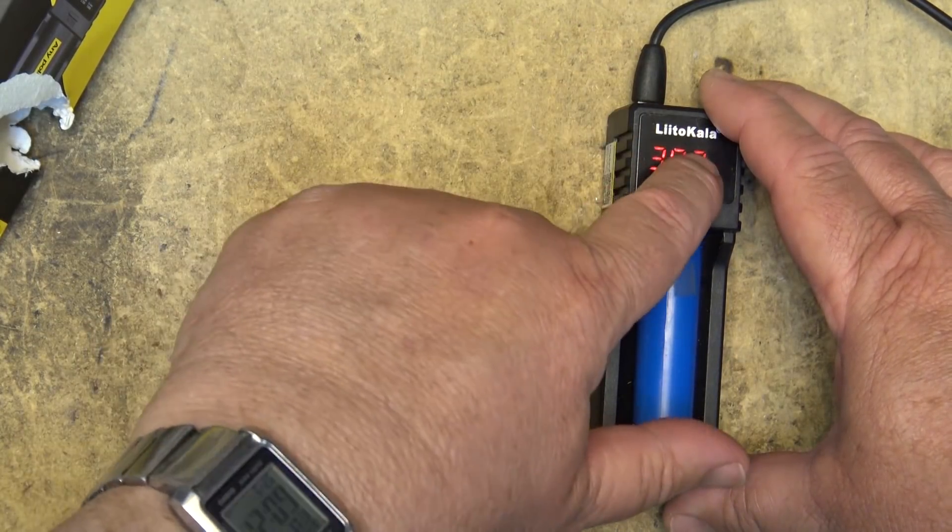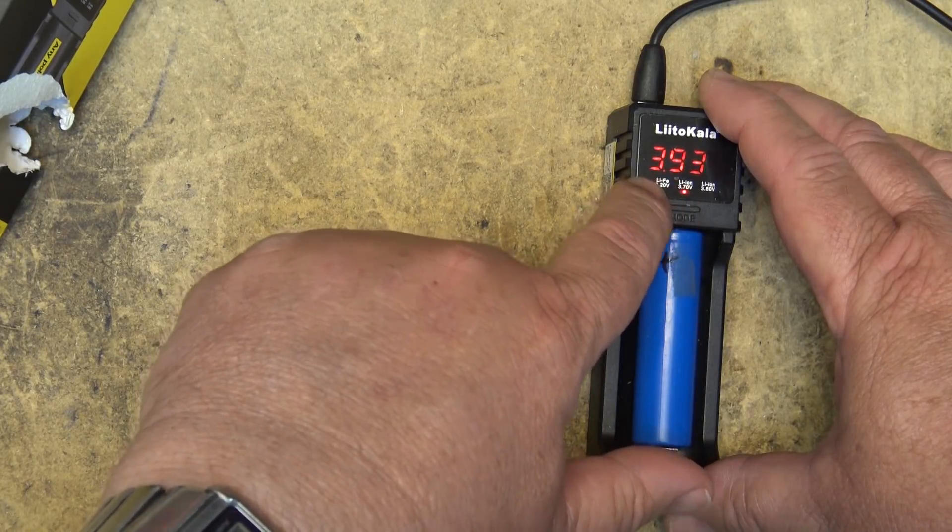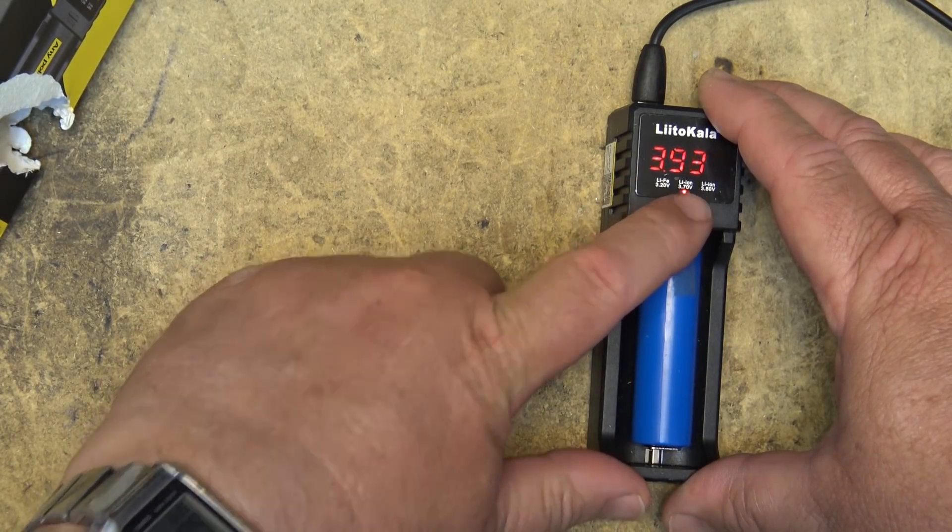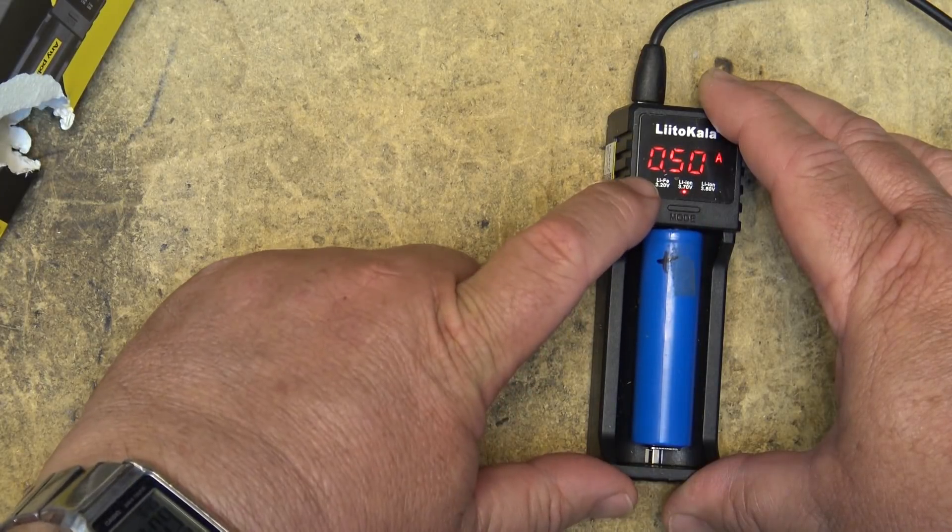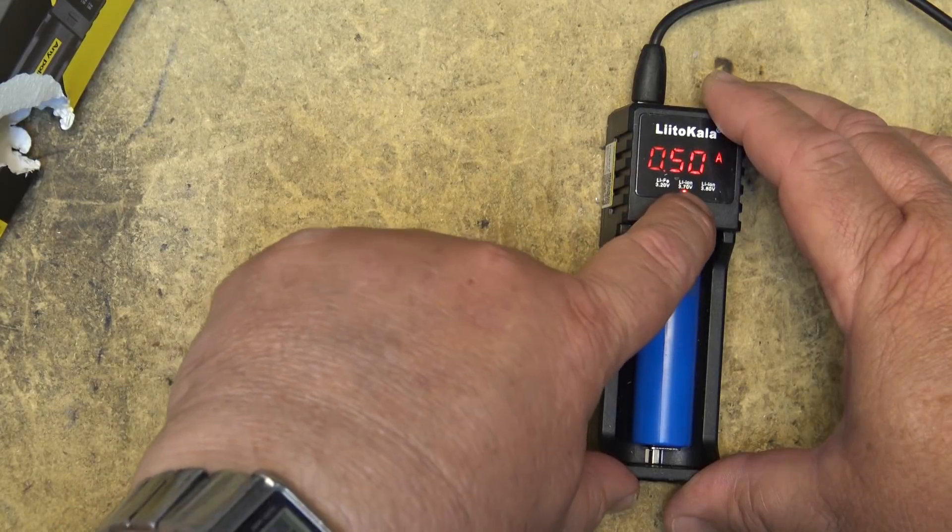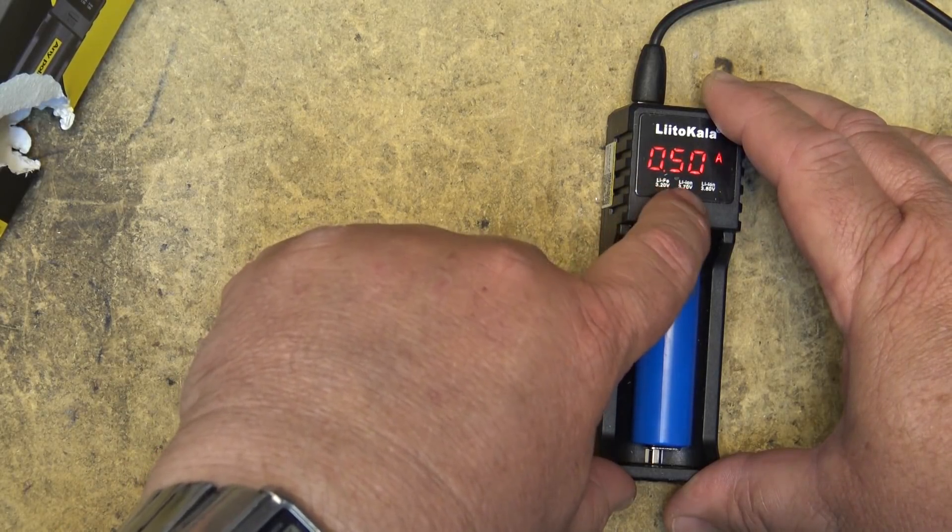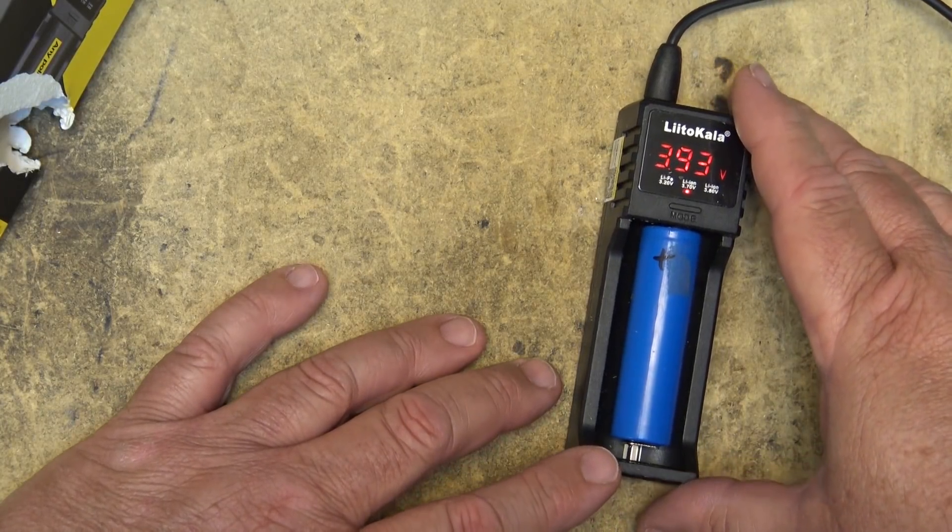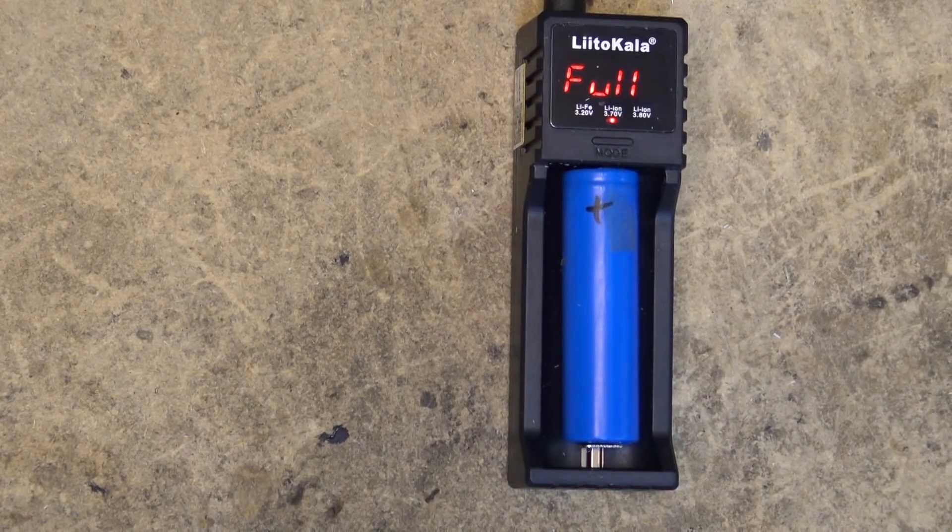This one just tells you the voltage that it's charging at. We're charging at a half an amp. When I press the button here, it just tells me it's charging at half an amp, and this is the charging voltage. Once it gets full, it should indicate that the battery has fully charged.